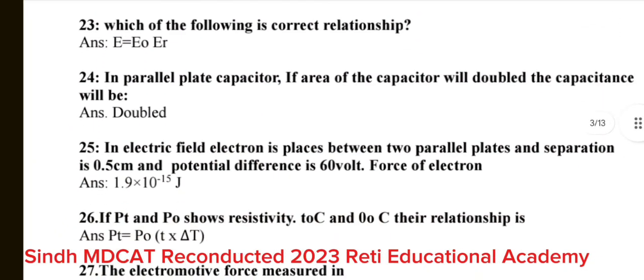Question number 23: Which of the following is correct relationship? The correct answer is E is equal to E O E R. Question number 24: In parallel plate capacitor, if area of the capacitor will doubled, the capacitance will be doubled. Question number 25: In electric field, electron is places between 2 parallel plates and separation is 0.5 cm. And potential difference is 60V. Force of electron? The correct answer is 1.9 into 10 power minus 15 Joules.